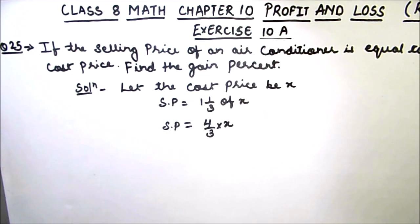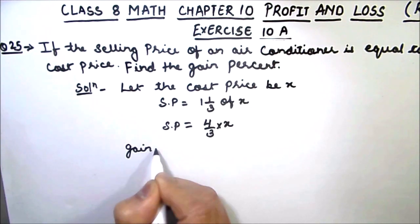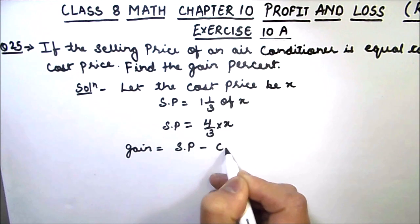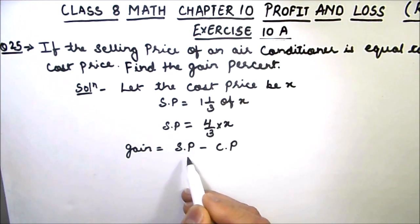For finding gain percent, we need to first find the gain. So we know that gain is equal to selling price minus cost price, because the selling price will be more than the cost price when it is a profit.